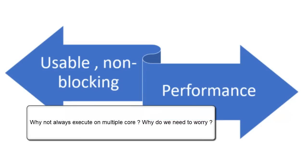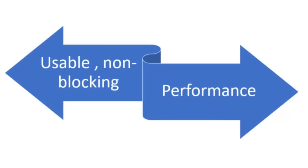Do we need to be aware of these terms separately? If it is just about executing on a single core or multiple cores, we would like to always execute on multiple cores, because parallel execution utilizes our cores and resources properly and gives us good performance. The reason we need to worry about this is that the goals of both Concurrency and Parallelism are very different. If we mix up these goals, we will have a bad design or an over-design.